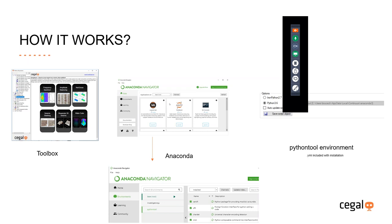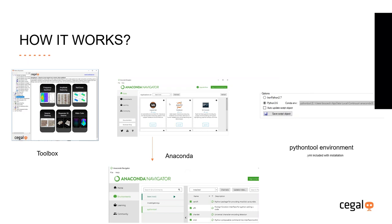How does it work? First of all, you have a toolbox installation which contains the Python tool itself, and then you add an Anaconda installation on the site. With the Anaconda installation, you can install the packages you want to use, like NumPy and SciPy. Then within Petrel, you'll connect your Python tool to the equivalent Anaconda environment and access all those packages. For those of you familiar with Anaconda, this will be second nature — basically just connect the Python tool to an Anaconda environment.